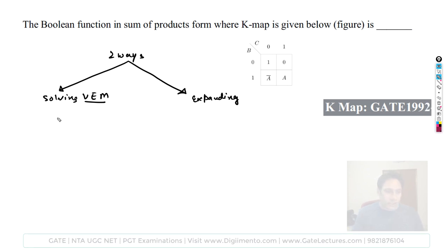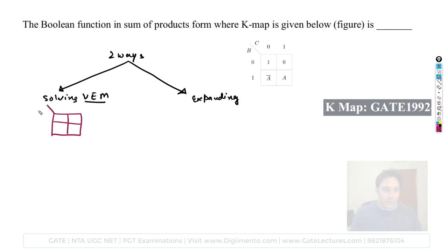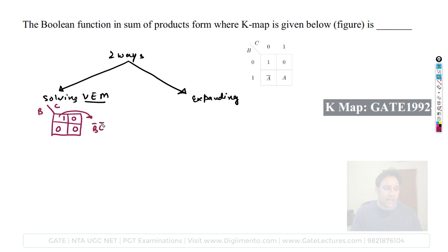Taking B and C both as zero gives one value, zero gives another. The first term obtained is B-complement and C-complement. Next, I take variable A as one and other variables as zero. Treating A-complement as don't care gives the equation representing BC — that is the second term.